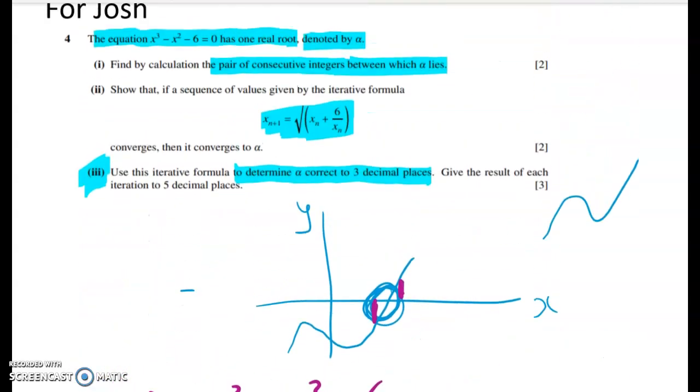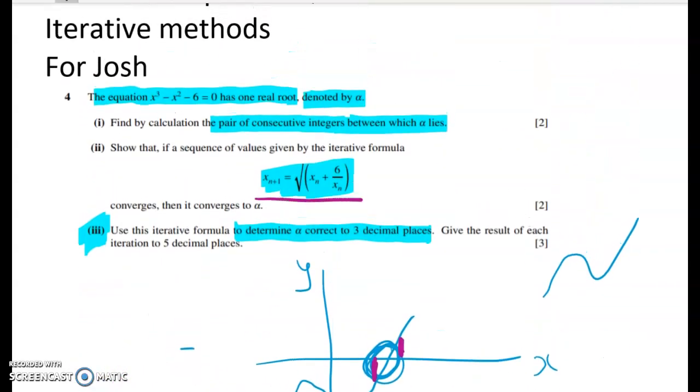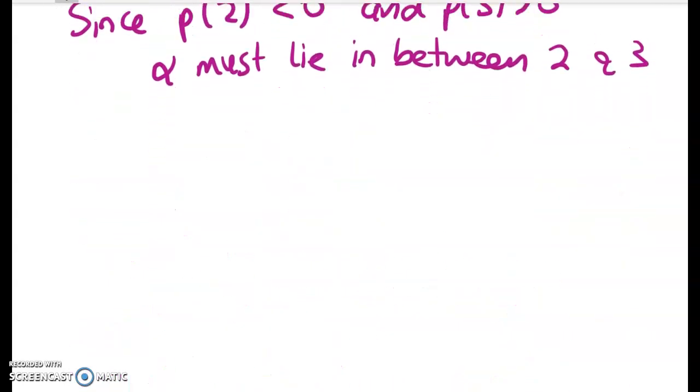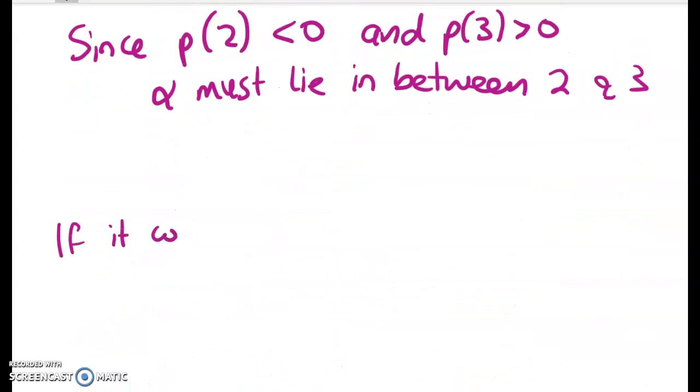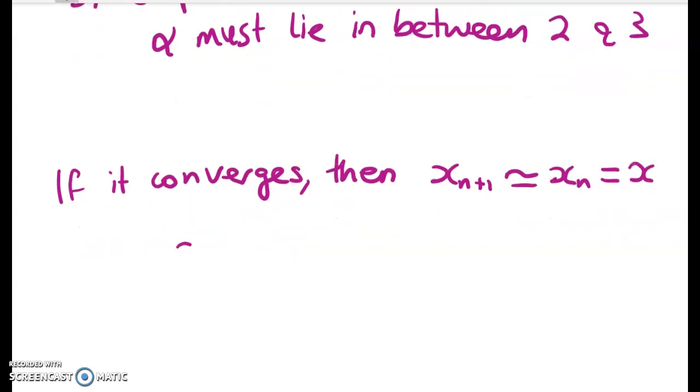So my next job is to figure out a formula to estimate that. What we've got to do is take the formula they've given us and show that it's going to converge to give us alpha. In other words we want to rearrange this and show that it ends up with this. So we can say something like this. If it converges then x n plus 1 has got to be roughly the same as x n. So we can call that converging value x. So we've got x is equal to x plus 6 over x.